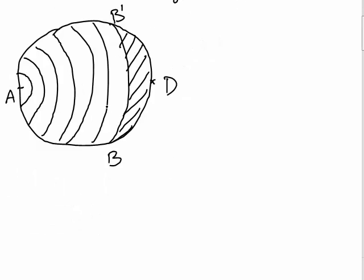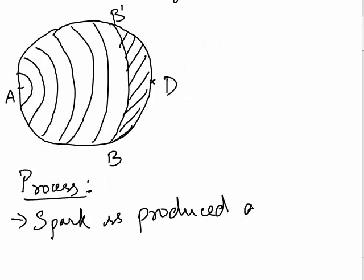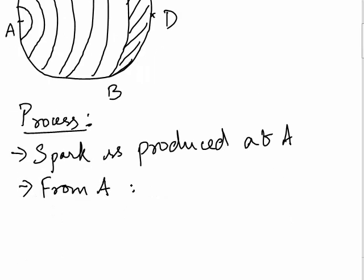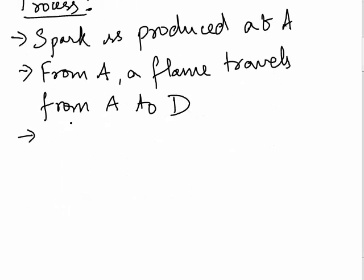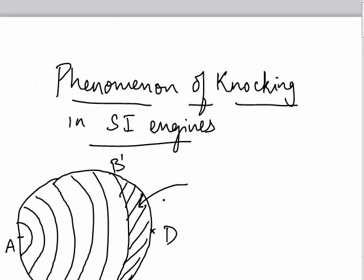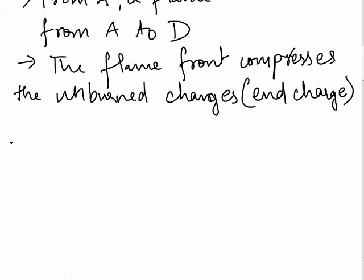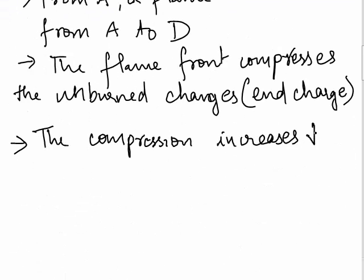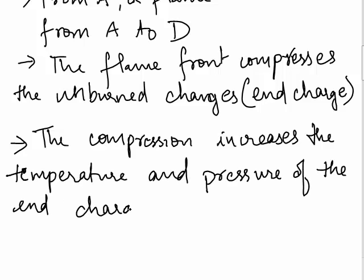Now B, B', D is your end charge. The process is like this: Spark is produced at point A and from A you have a flame front that travels from A to D. This flame front compresses the end charge or the unburned charge. Due to this compression there is an increase in the temperature and pressure of the end charge.